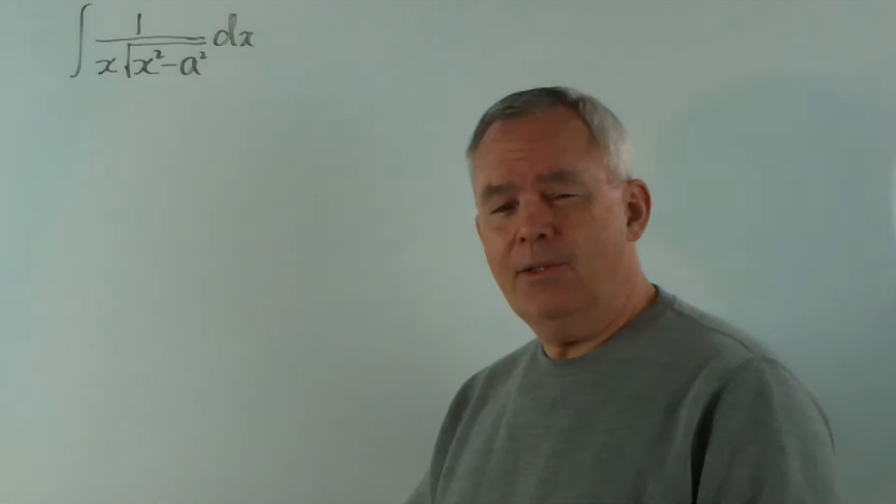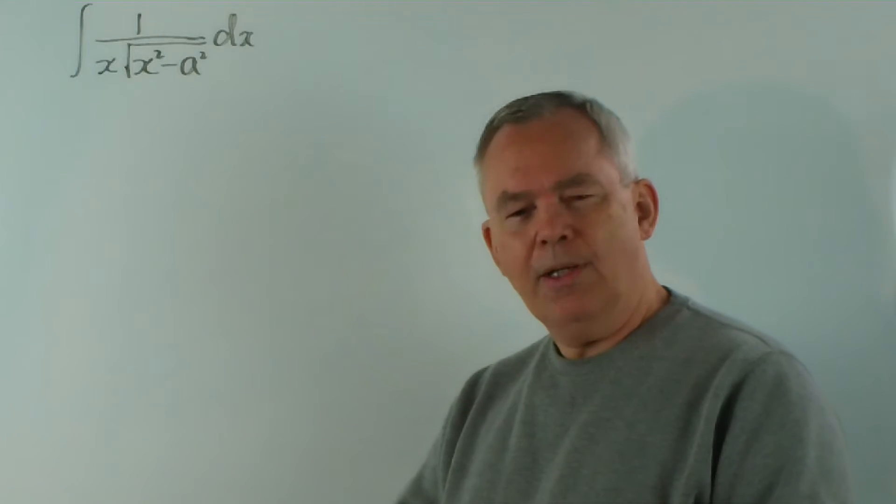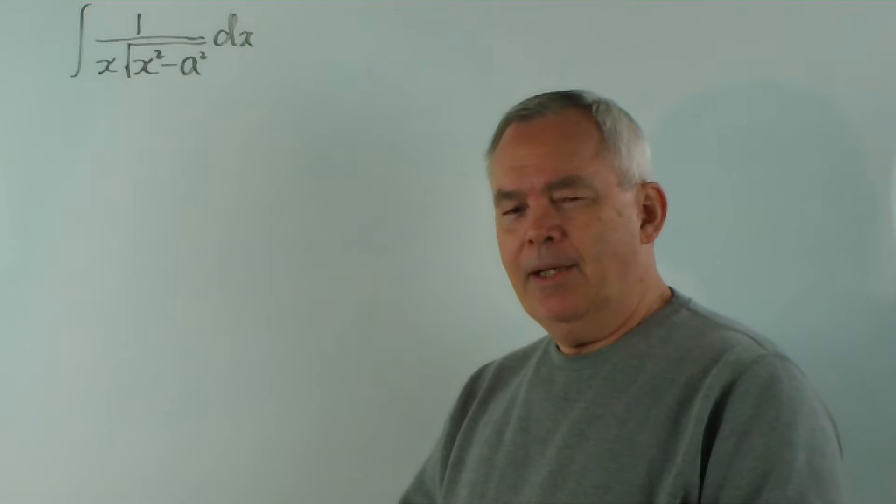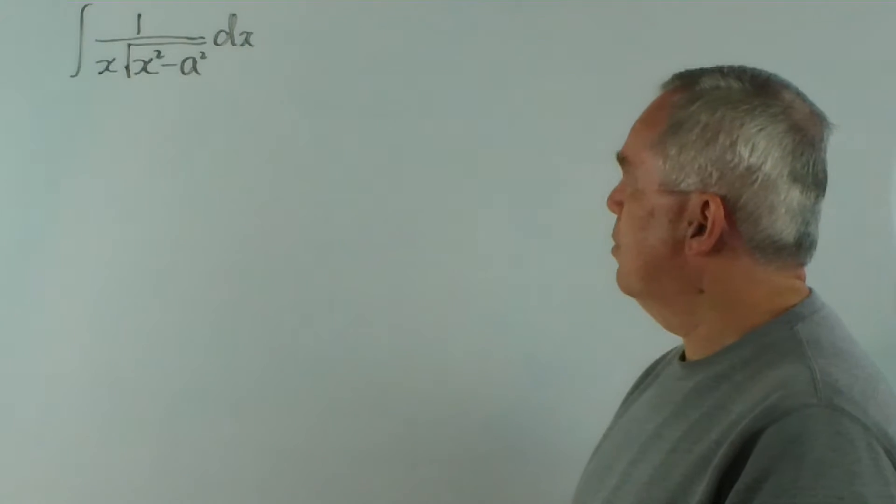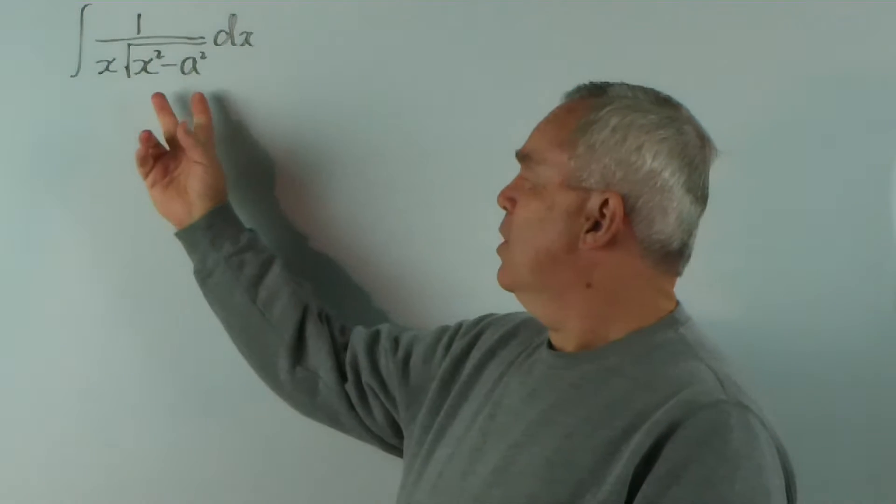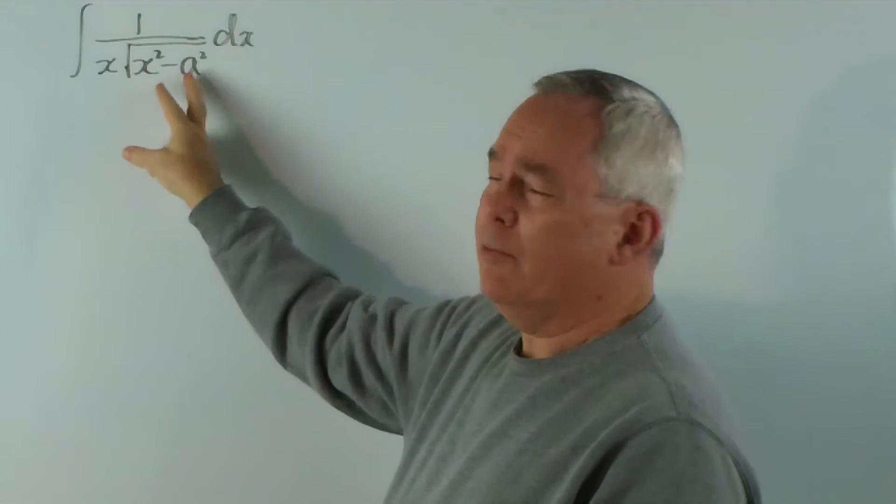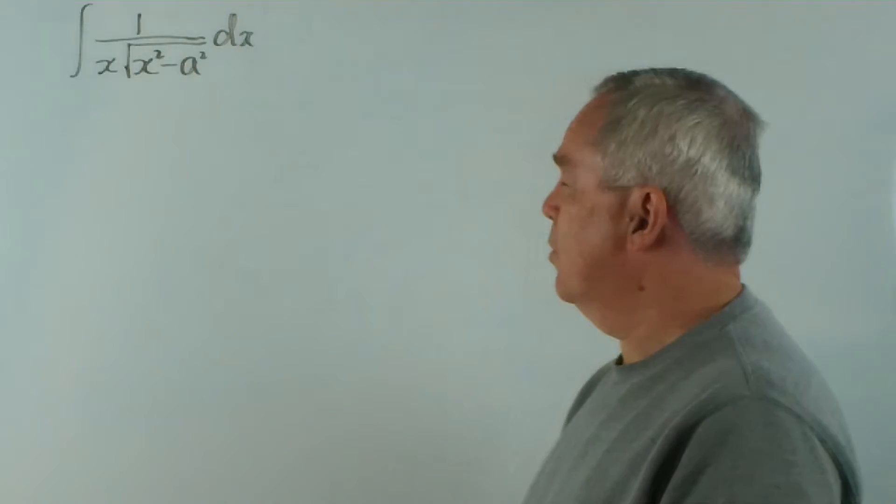I'm continuing in this video the series of 100 integrals produced by Jim Caronius all those years ago. And this is integral number 19 in his list. It's very similar to integral number 18, which has the a squared and the x squared reversed.